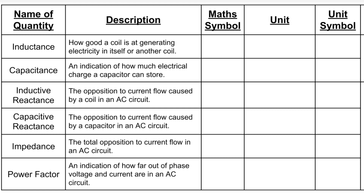The mathematical symbol we use for inductive reactance is a capital X with a capital L in the subscript — X_L. The X means reactance, which is another type of opposition to current flow, and the capital L in the subscript tells us that in this case we're talking about reactance caused by an inductive load. Because this is a type of opposition to current flow, the SI unit we use is the same as resistance — ohms — and therefore the unit symbol is the omega symbol Ω.